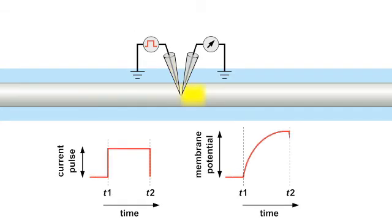After injecting positive current into the axon, there is a delayed activation of the voltage response. This delay occurs because the current has to charge the membrane capacitance.